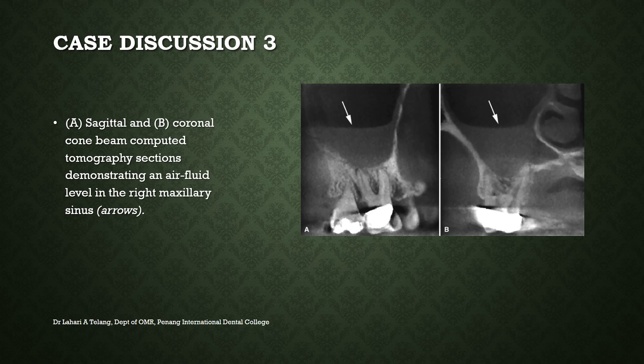This is another case with slices from a cone beam CT scan, where arrow marks point towards an air-fluid level indicating sinusitis. Specifically, the right maxillary sinus is showing fluid levels, indicating it as the cause of sinusitis.